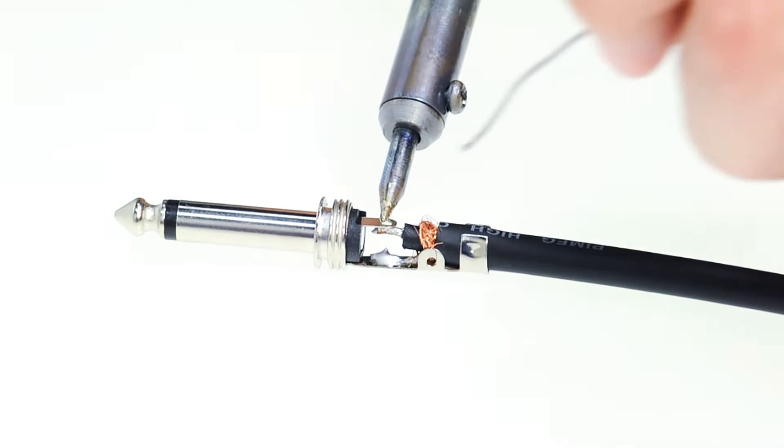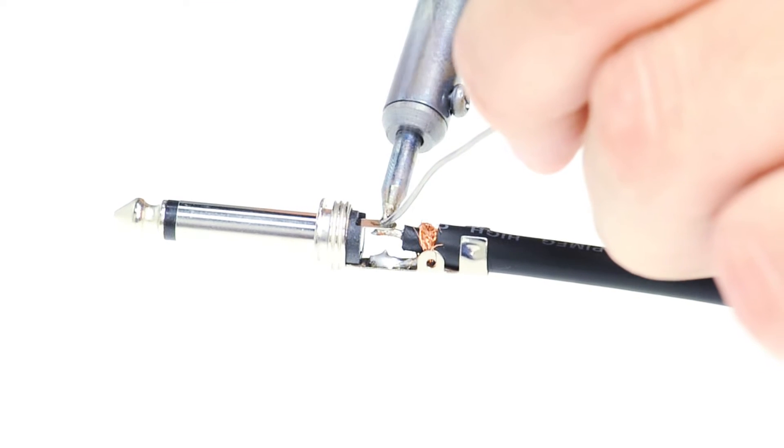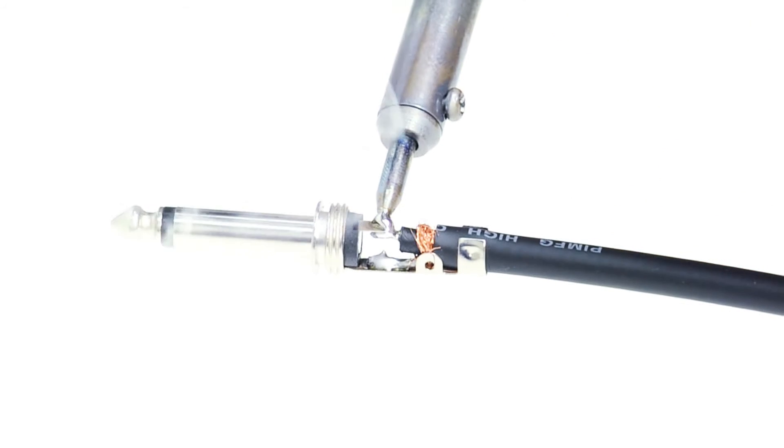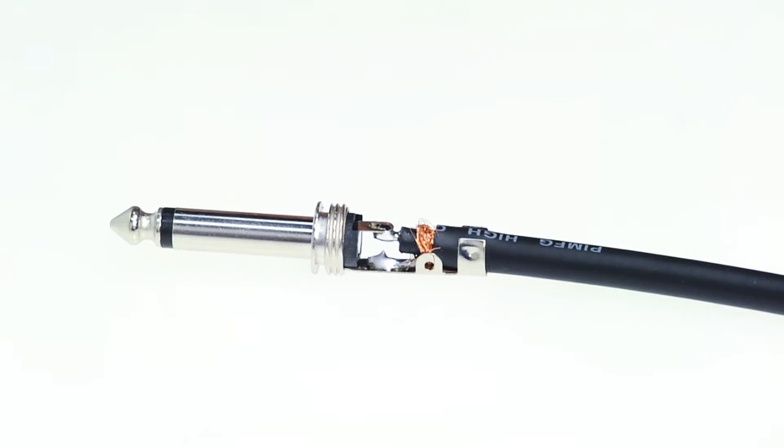They work by heating up solder to the melting point, which allows you to fuse two pieces of metal together. As it cools, solder becomes hard, permanently joining the two pieces of metal together.